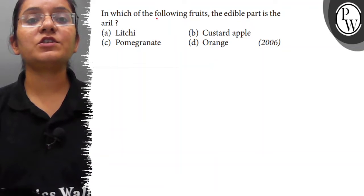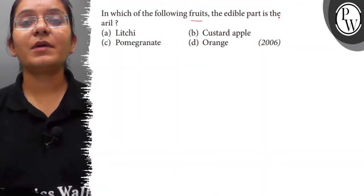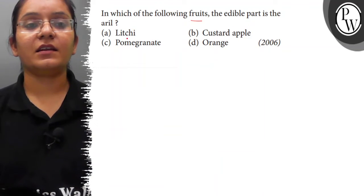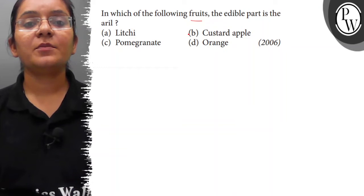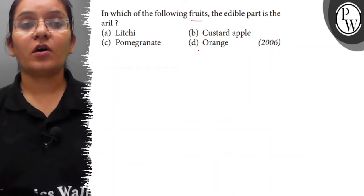Friends, the question is: in which of the following fruits is the edible part the aril? A) Lychee, B) Custard apple, C) Pomegranate, D) Orange.